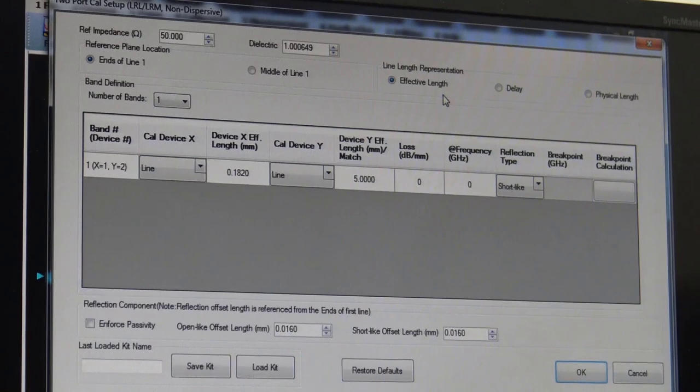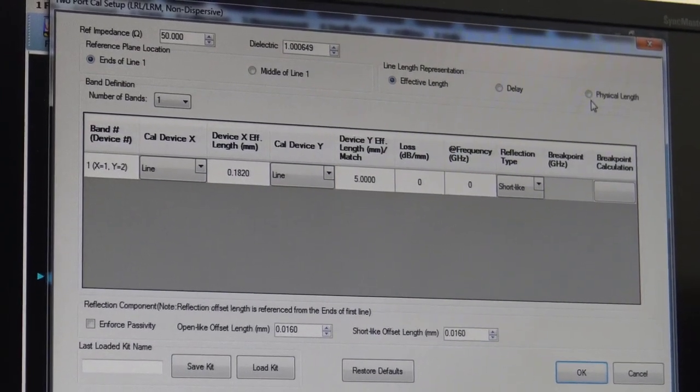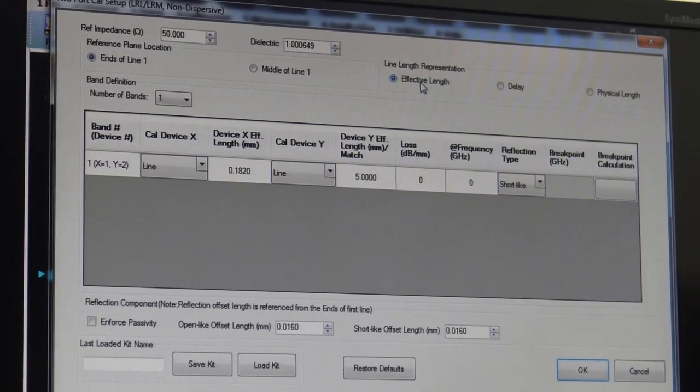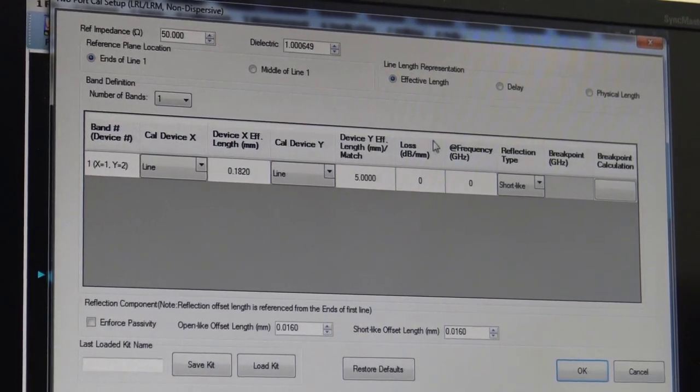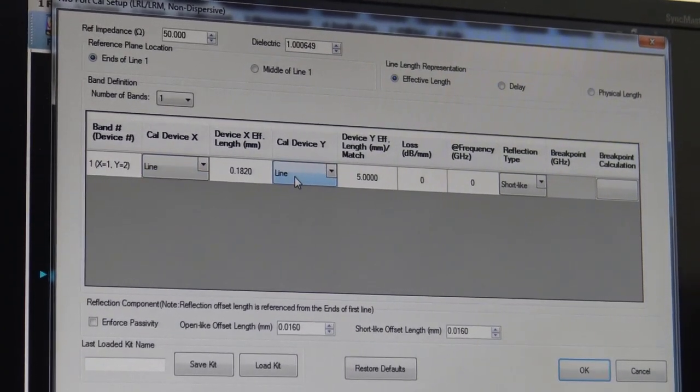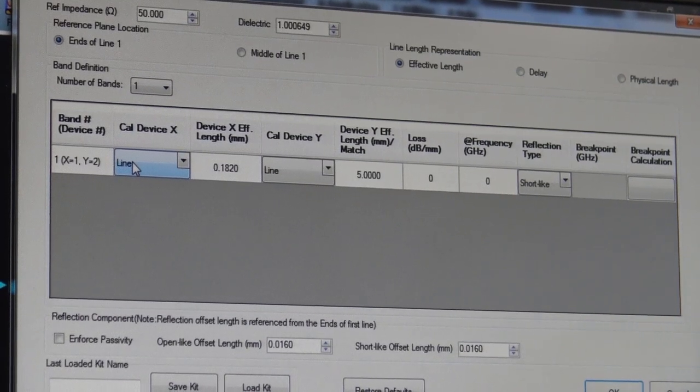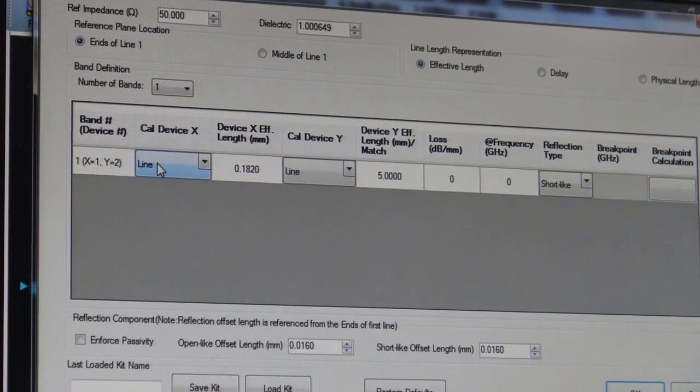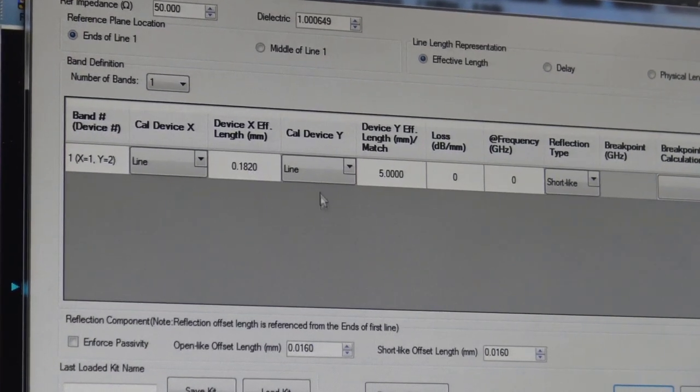The length of our calibration through is then defined here either by effective length, by the delay or the physical length. And we have selected effective length in this representation. Then down here is where we define the number of bands we'll be using and the types of devices. If this were LRL, then we would have two lines, a line and a second line, and then a reflect. Our first line is our calibration through. It's 182 micron length, effective length. And that's what's entered here. Our second standard is a match. So we'll change this to the match.